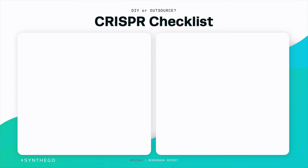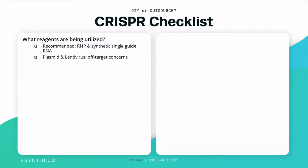If you are considering outsourcing, especially if you can't get into your lab at the moment, we've put together a handy checklist to make sure that if you do go to other people — maybe a core facility — you ask the right questions to ensure your edits and cell lines are done appropriately, because you don't want to spend time and money and get something that may not be usable. As we've talked about in the benchmark report webinar series,